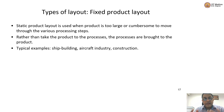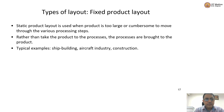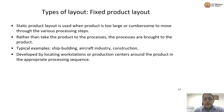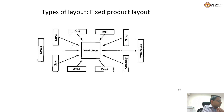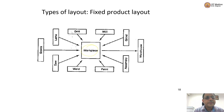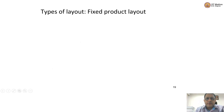Construction is another example — when you construct a building, it is a fixed product layout because you are not going to move the building. All the processing has to happen around that product. The workpiece remains stationary and equipment and personnel move around it. So in the layout diagram, here is your workpiece — your airplane or whatever — and all the drilling, milling, grinding, and welding happens around it. That is how the fixed product layout looks.